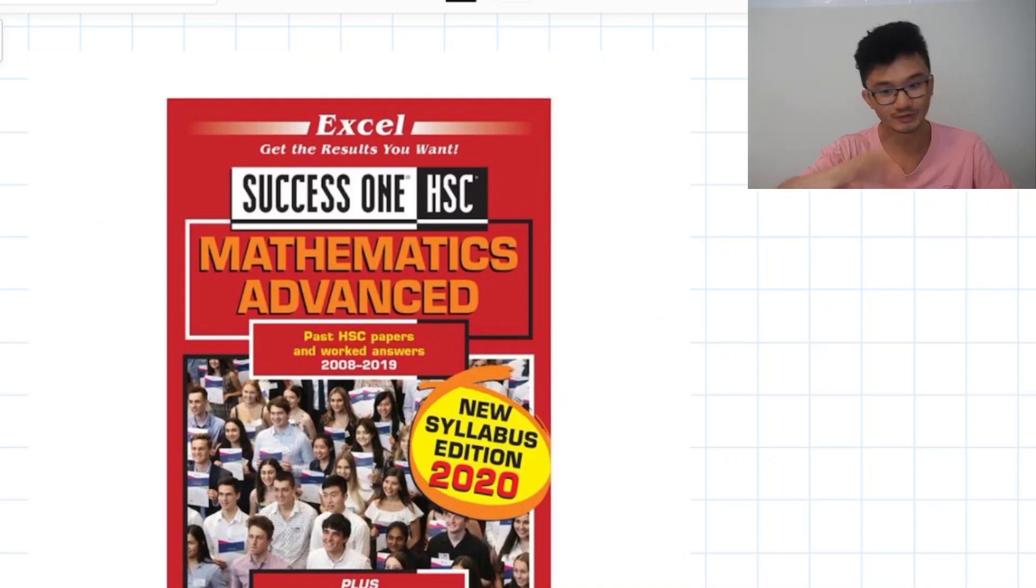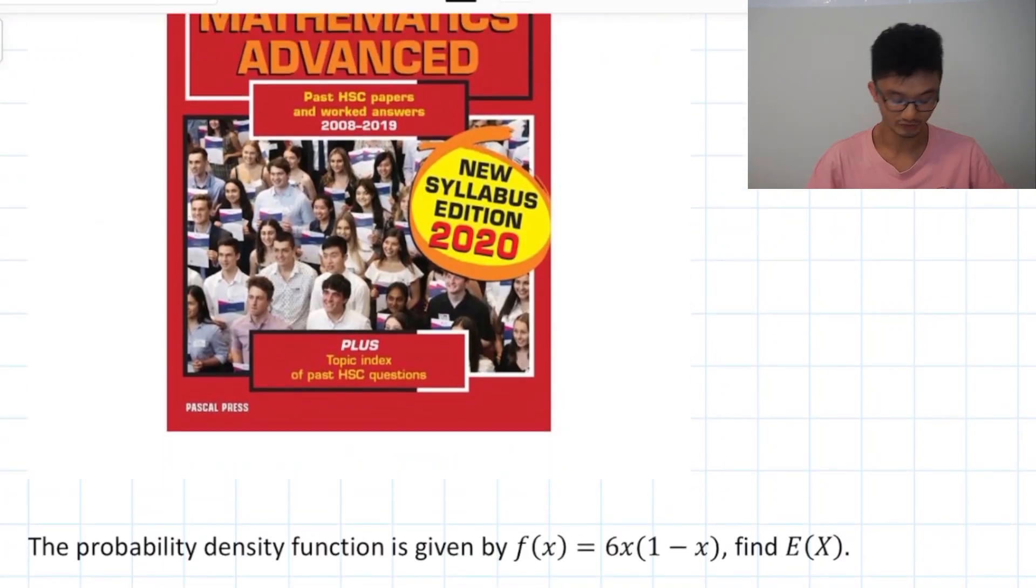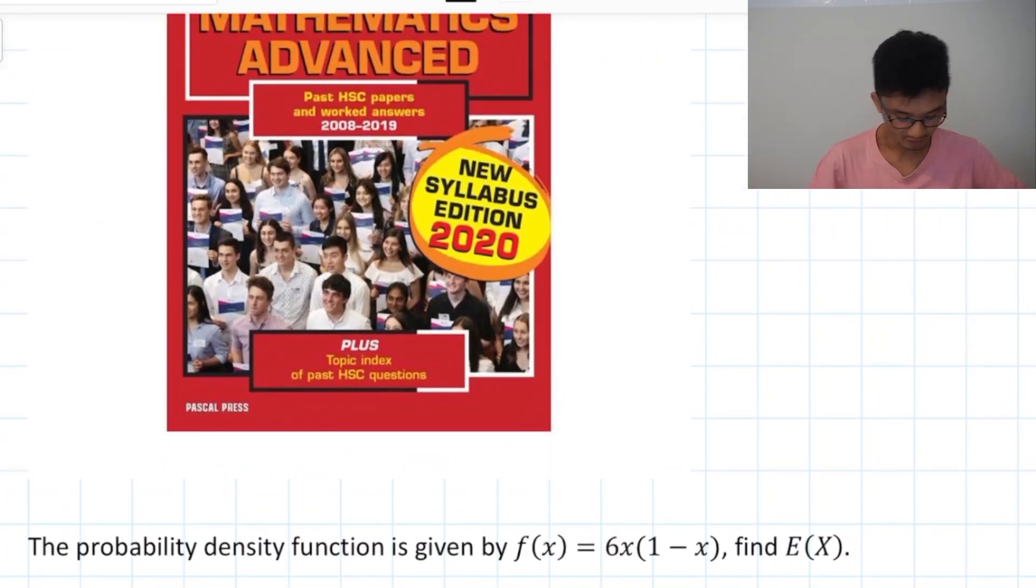What they've done is they've updated those particular questions and added some nuance which is a great idea in theory, but then one of my students showed me a question, not exactly like this but it looks something like this. The probability density function is given by f(x) equals 6x(1-x), find E(X). And if you've seen that before, E(X) is the expected value or the mean, they mean the same thing.